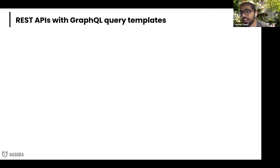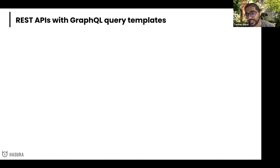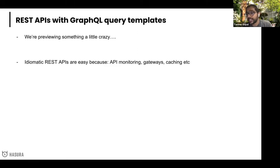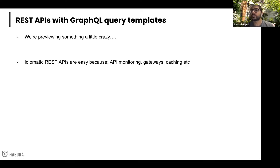The next thing — a bit controversial with GraphQL people — is REST APIs with GraphQL query templates. One of the things we've often heard is that in environments beyond modern front-end web apps — mobile applications, other services, enterprise environments — REST APIs are very easy because there's a tremendous amount of existing tooling: API monitoring, gateways, CDNs, caching, cache control headers. All of that has to get reinvented for GraphQL. So we're planning to add support for going to GraphiQL, creating a GraphQL query, templating out certain things via query variables, and then creating an idiomatic REST endpoint — whether it's GET, POST, PUT, PATCH, or DELETE — controlling error responses, cache control headers, and URL path parameters.